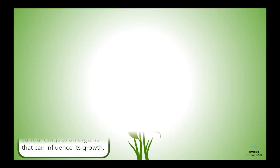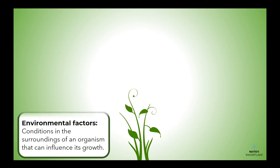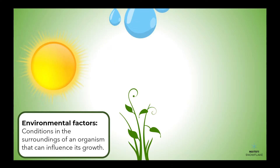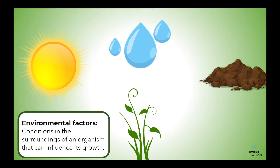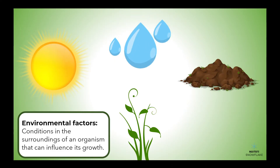Environmental factors are conditions in the surroundings of an organism that can influence its growth. For example, a plant needs sunlight, water, and space to grow. Without these conditions, the plant's growth could be stunted, or it might even die.